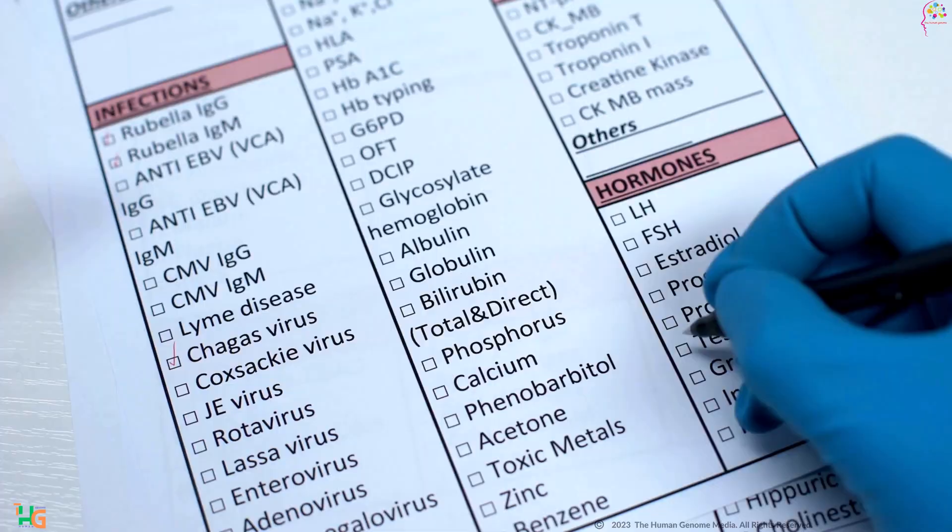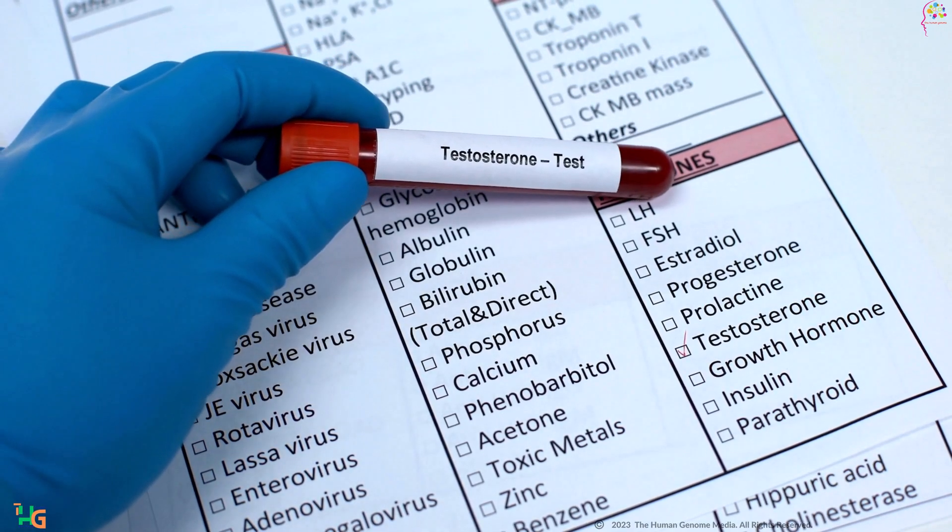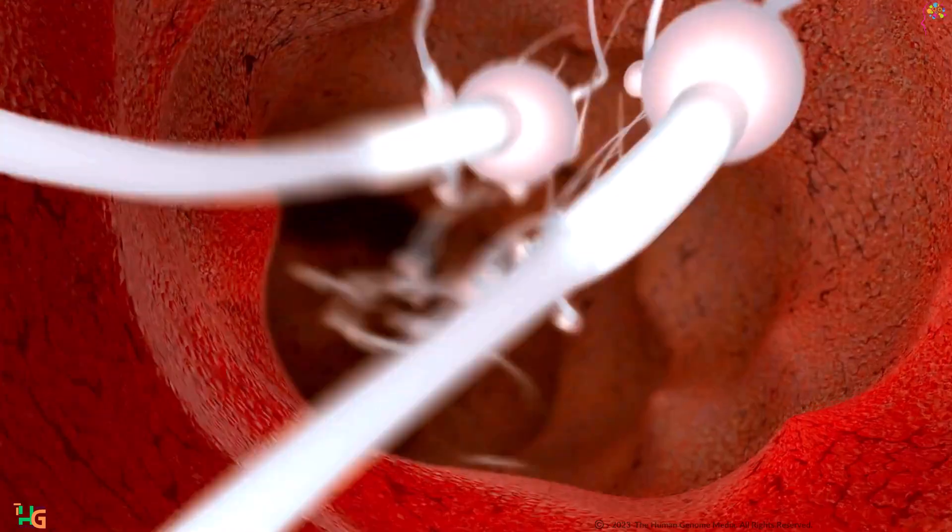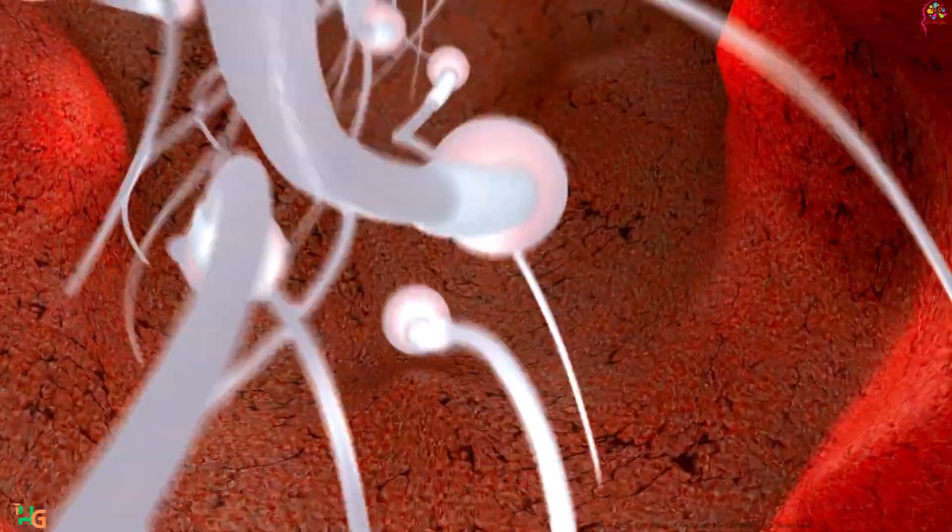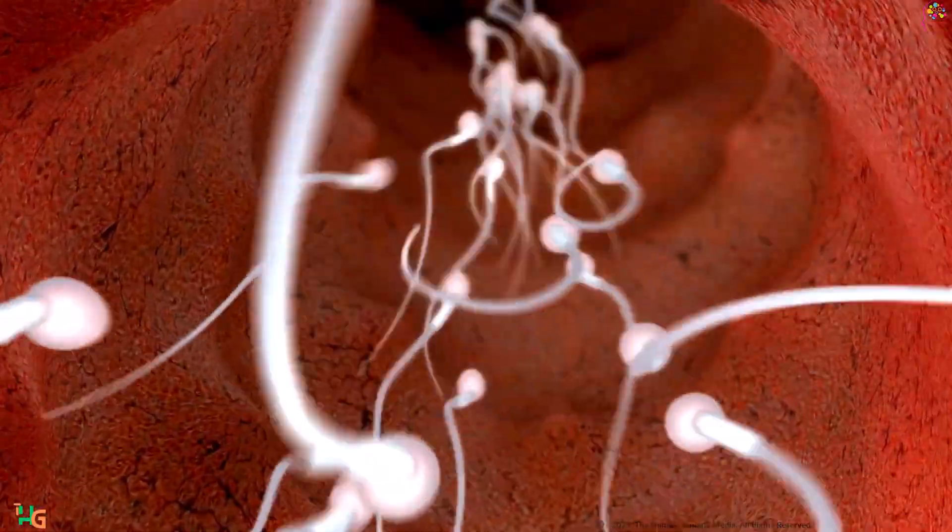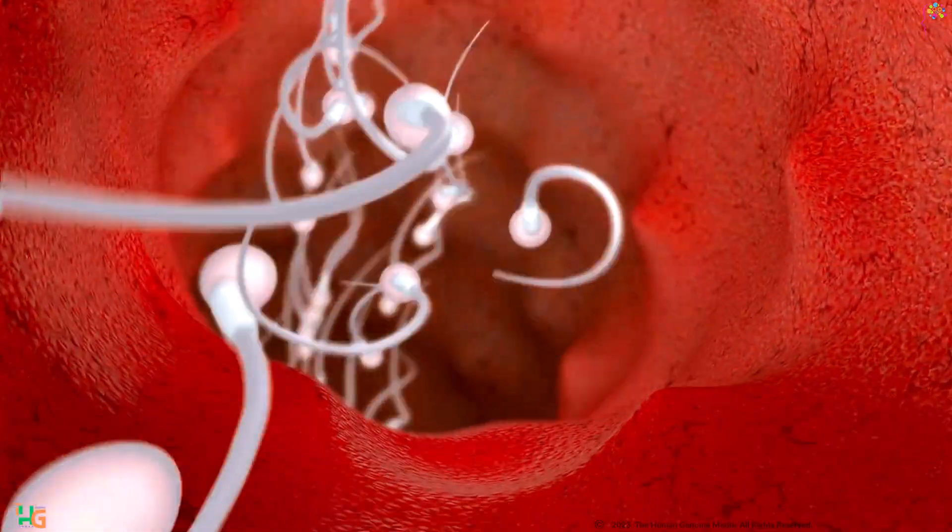The testes produce sperm and testosterone, the primary male sex hormone. The epididymis stores and transports sperm from the testes to the vas deferens, allowing for maturation and gaining motility.